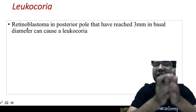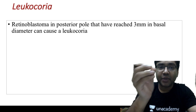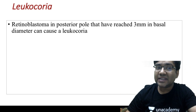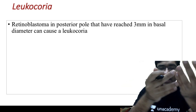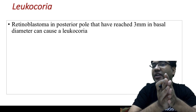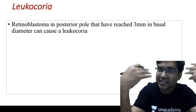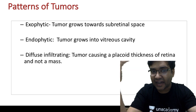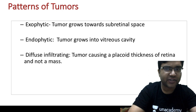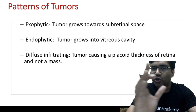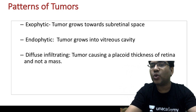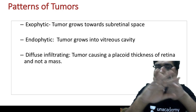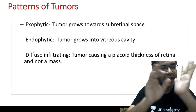Retinoblastoma causes leukocoria because when the tumor at the posterior pole reaches 3 mm or more in diameter, it forms a plaque — sometimes with calcification — that is visible from outside as leukocoria. The patterns of tumor growth are exophytic (toward subretinal space), endophytic (into the vitreous cavity), or diffuse infiltrating (spreading as a flat plaque rather than a mass).